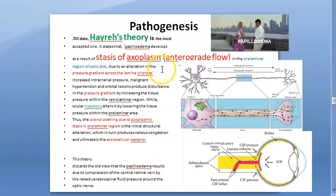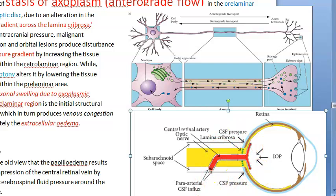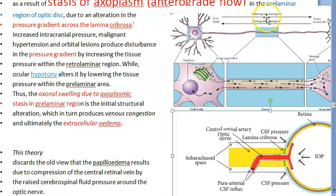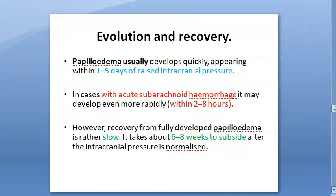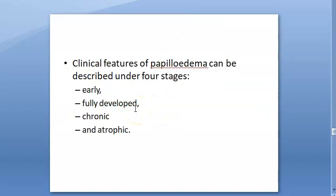Regarding pathogenesis, the High Race theory explains that pressure disturbances across the lamina cribrosa in the pre-laminar region cause axoplasmic stasis - particularly affecting anterograde flow - leading to axonal swelling and then extracellular edema. Papilledema can develop within one to five days of raised intracranial pressure, or very rapidly with subarachnoid hemorrhage. If ICP is normalized, recovery takes around eight weeks; if chronic, visual prognosis is poor.